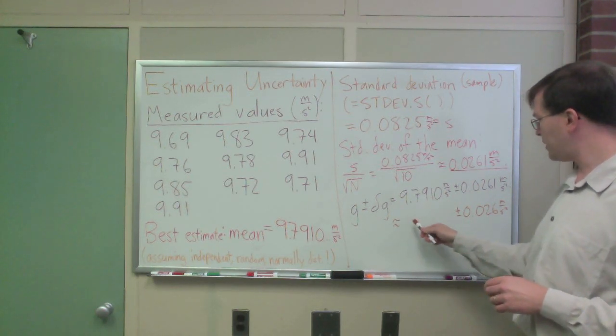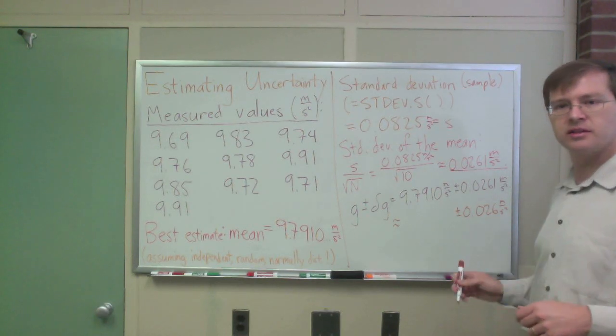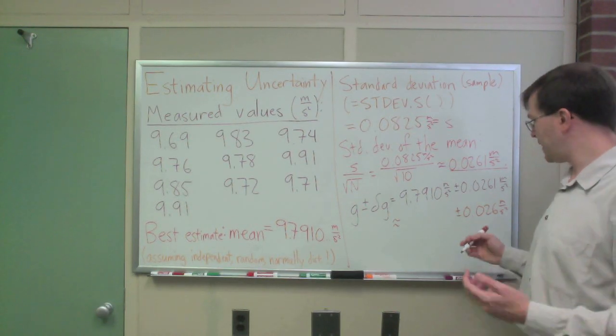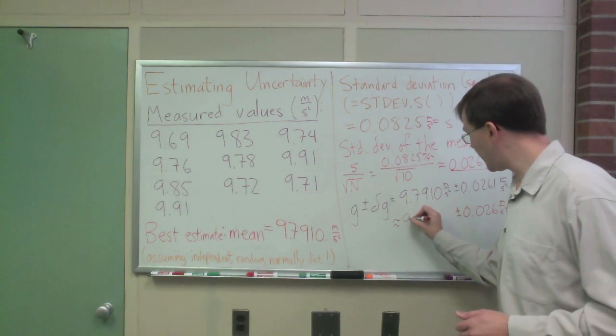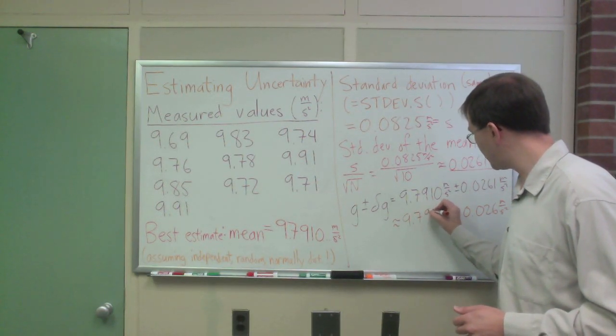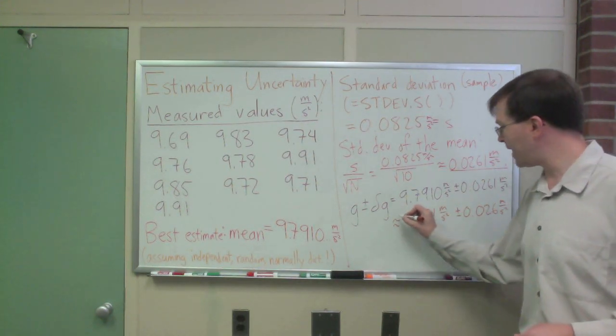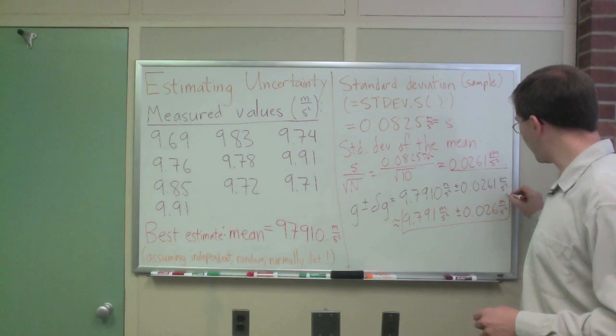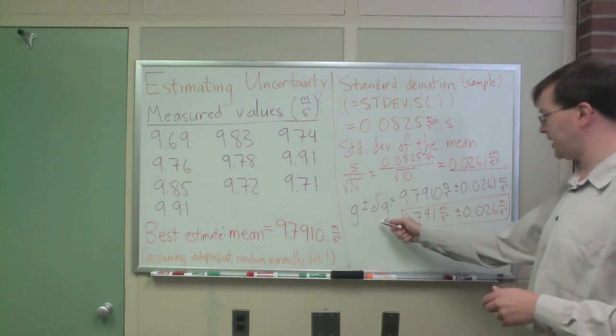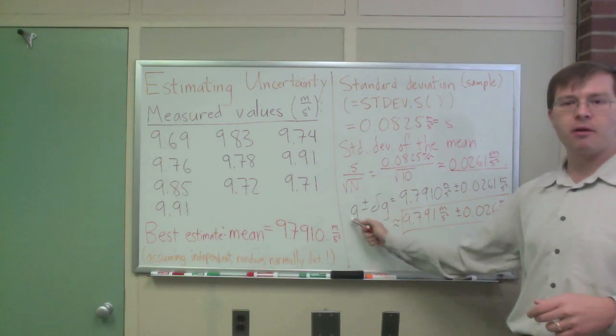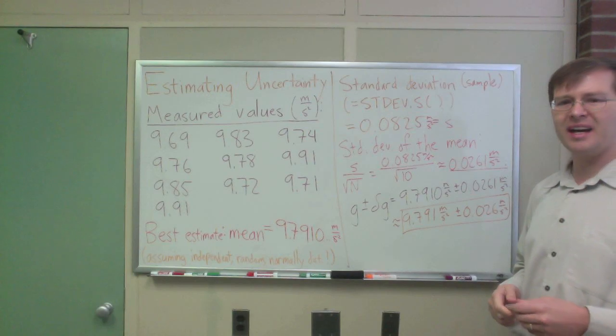Your g then, we're just going to keep as many digits in g as we need to match the digits in my uncertainty. That's all we do. And so that is three digits past the decimal point, 9.791 meters per second squared plus or minus 0.026. And that is my scientifically reasonable way of reporting the uncertainty delta g in my measured value g, the best estimate of the value and how confident I am in that value.